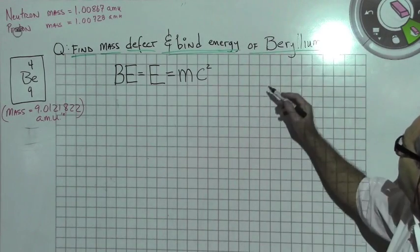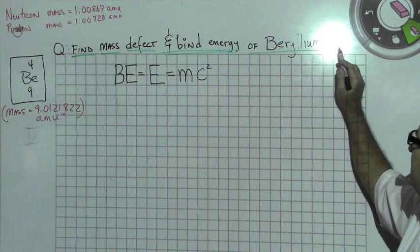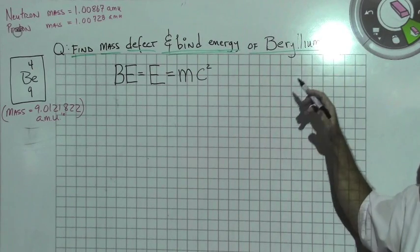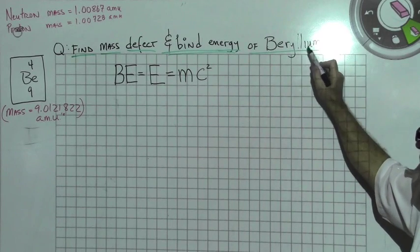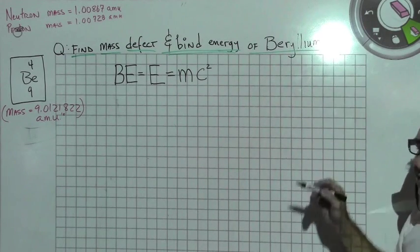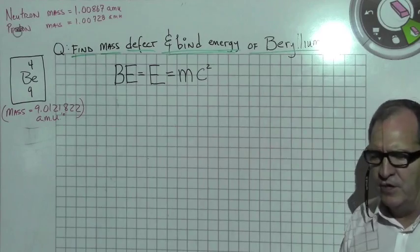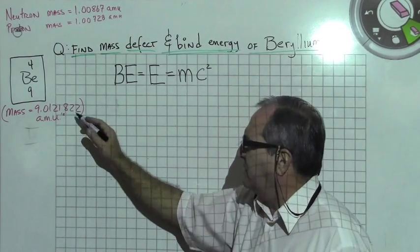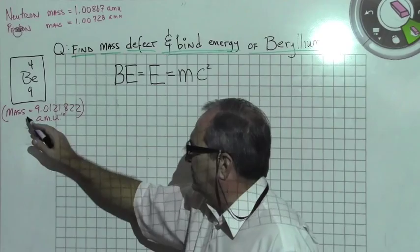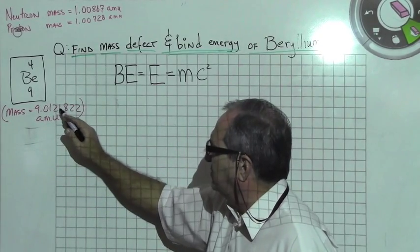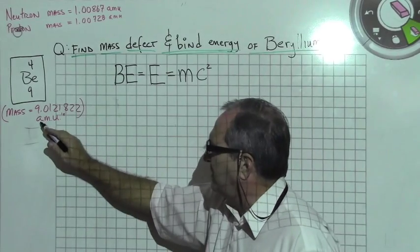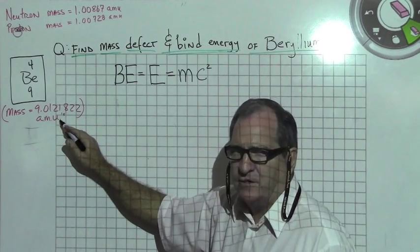Needless to say, if we take a particular element and give you the mass isotopes of this element, such as beryllium 9, and 9 represents one of the isotopes. So we go ahead and give you the mass of that isotopes, which is 9.01212182 atomic mass units.